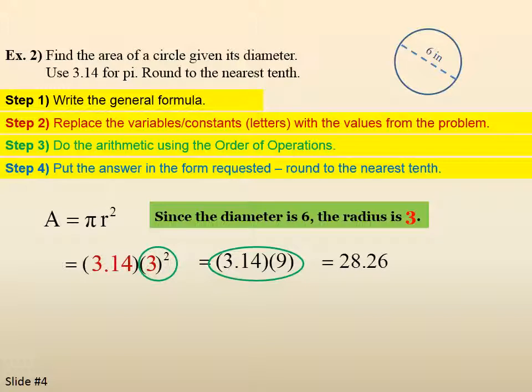Put the answer in the form requested. In this case, round to the nearest tenth. So there's our tenth position. We have to look one to the right. 6 is 5 or higher, so it raises the 2 to a 3. So it's 28.3. Attach on the units, it's an area, so it's going to be the second power. It was inches, so it's inches squared. So the answer is 28.3 inches squared.